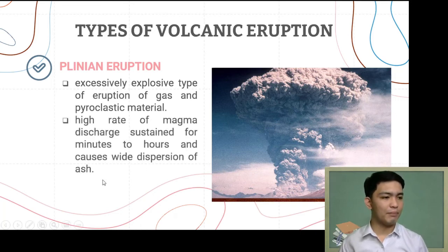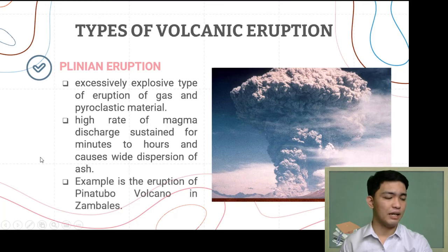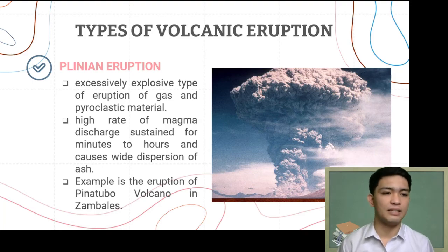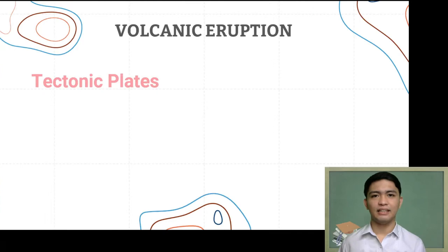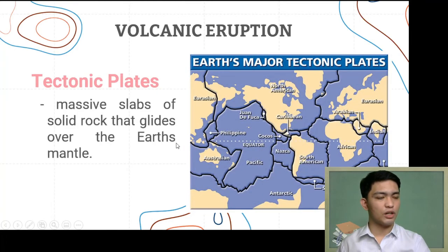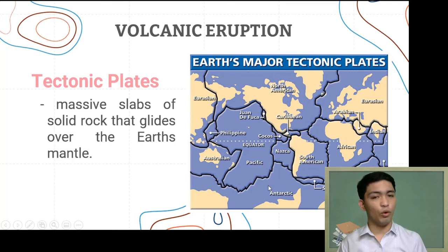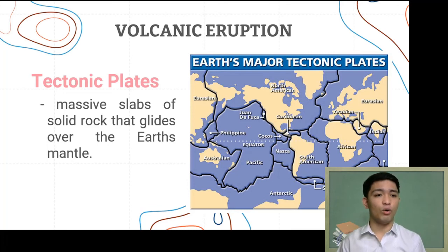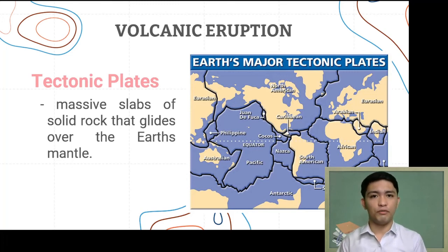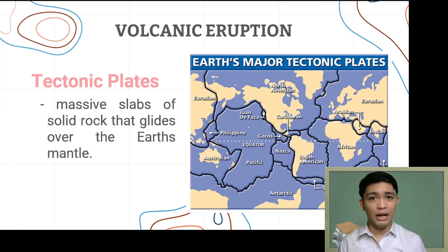An example of Plinian eruption is what transpired in Mount Pinatubo in Zambales, Philippines. Now, why do volcanoes erupt? Tectonic plates are the key. These massive slabs of solid rock slide over the earth's surface towards or away from each other. As they do that, fissures or openings are created that allow the magma underneath to escape — and that is generally how most volcanoes are formed. Eruptions vary depending on the type of volcano and the type of tectonic boundary it sits on.